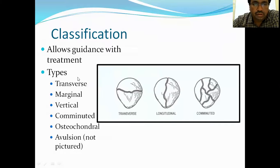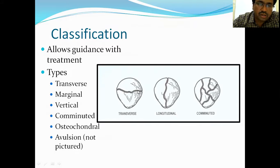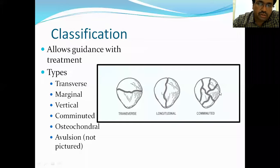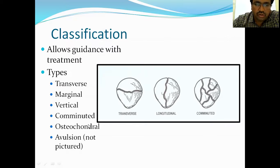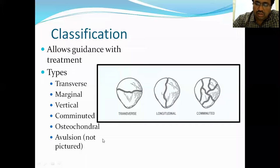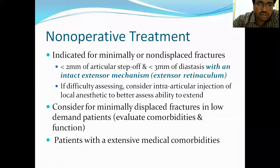In classification, different types of patellar fractures include: a transverse fracture across the fragment, a vertical or longitudinal fracture, and if there are more than two pieces it is called a comminuted fracture. An avulsion fracture is where a piece of bone is pulled off by the muscle.